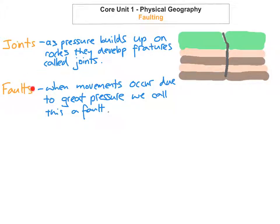So a quick little definition for faults. When a movement occurs due to great pressure, we call this a fault. This would be an example of a fault. So it would have been a crack or a fracture, but when the movement actually of the two plates maybe pull apart because of the great pressure, it creates a fault.